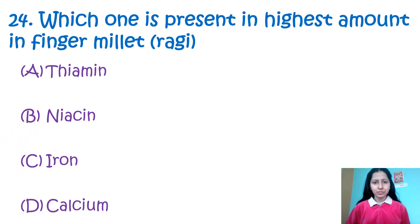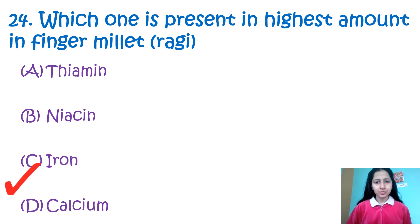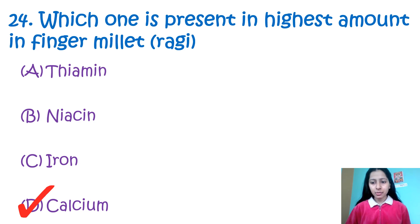Question 24: Which one is present in the highest amount in finger millet (ragi)? Option A: thiamine, B: niacin, C: iron, D: calcium. Finger millet contains the highest amount of calcium, so the correct option is D. Finger millet also contains protein (5–8%), carbohydrates (around 75%), dietary fiber, and minerals, making it a nutritious cereal.